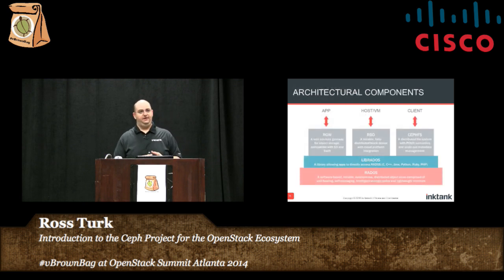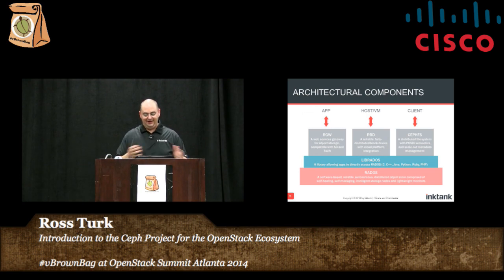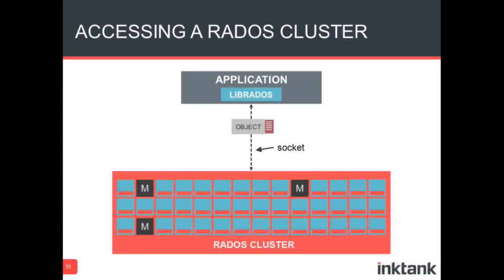So that's RADOS. How you access RADOS is LibRADOS. LibRADOS is how you access RADOS if you are an application. It's a library with C, C++, Python, Ruby, PHP, Java, and Erlang bindings. You link it into your application and it speaks a very efficient raw socket protocol to talk to the cluster — not over HTTP or anything like that.